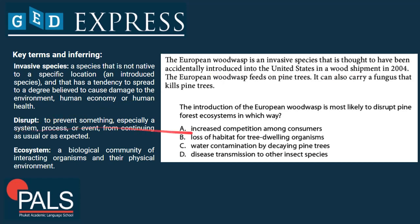An invasive species is a species that is not native to a specific location — an introduced species — that has a tendency to spread to a degree believed to cause damage to the environment, human economy, or human health. Our wood wasp is the introduced species that came to the US by wood shipment in 2004 from Europe. Disrupt means to prevent something — especially a system, in this case our ecosystem — from continuing as usual or as expected. An ecosystem is a biological community of interacting organisms and their physical environment, including all organisms in a specific area plus the non-living environment like air, rocks, and water.